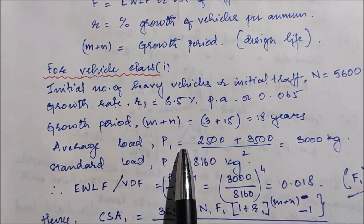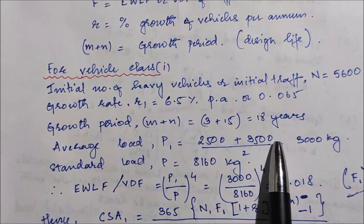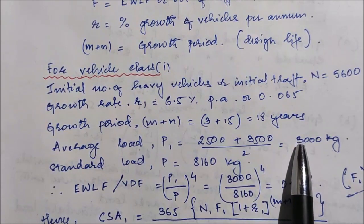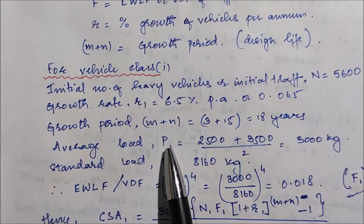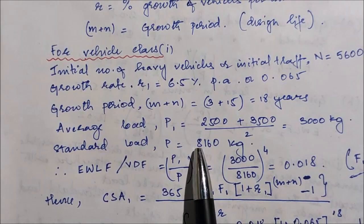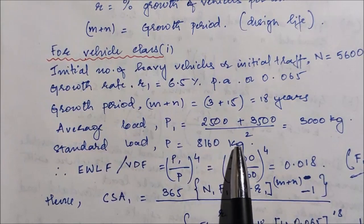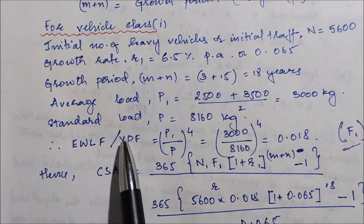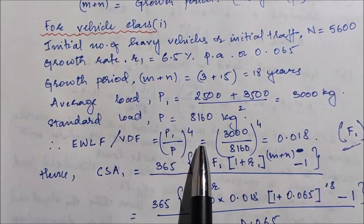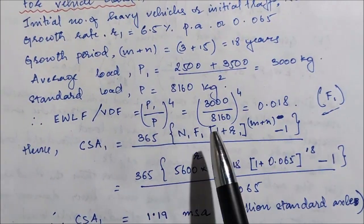The average load P1 is calculated as the average of the load range 2500 to 3500 kg, which gives 3000 kg. The standard axle load is 8160 kg. We now find EWLF or F1 using the fourth power equation: F1 = (P1 / P)^4 = (3000 / 8160)^4, which gives the value of F1.